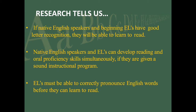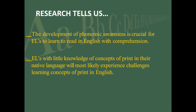What does research say about teaching reading to non-English speakers? If they have good letter recognition, they will be able to learn how to read. They can both develop reading and oral proficiency skills simultaneously if given a sound instructional program — and this is true for any child learning to read. If you are teaching them well, they will learn, though sometimes that means not teaching everybody the same way. English learners have to be able to correctly pronounce English words before they can learn to read. That doesn't mean their words won't have an accent from their native language, but the word has to be in their vocabulary. Phonemic awareness, just as it is with native English speakers, is crucial to learning how to read in English.